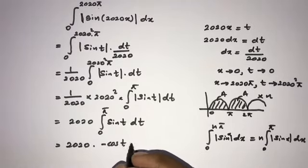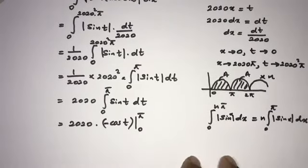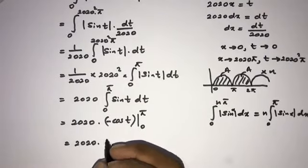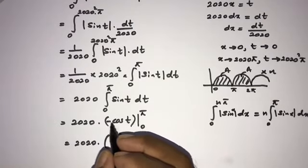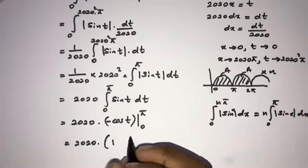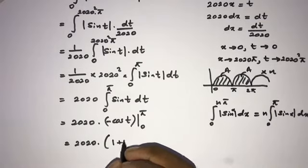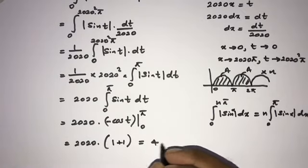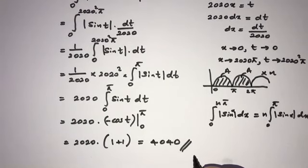The integral of sine of t is minus cosine of t. Evaluating from 0 to π: we get minus cosine(π) minus (minus cosine(0)), which is minus(−1) + minus(−1) — that is, 1 plus 1 equals 2. So the final answer is 2 times 2020, which equals 4040. If you like this video, please subscribe to the channel. Thank you for watching.